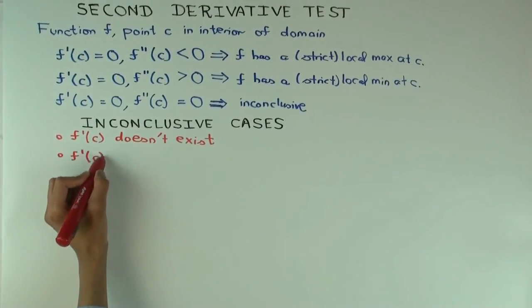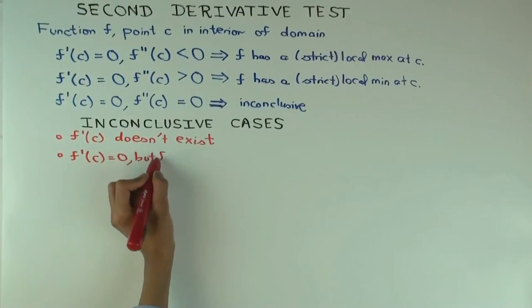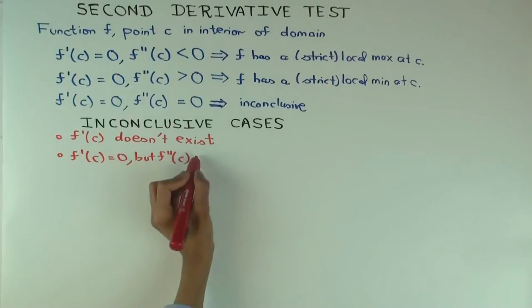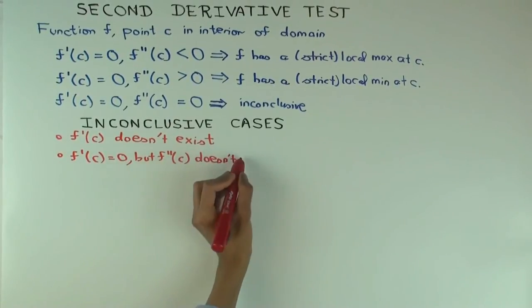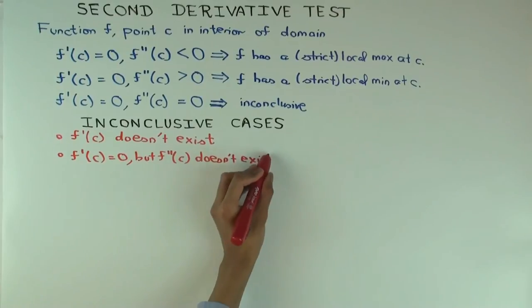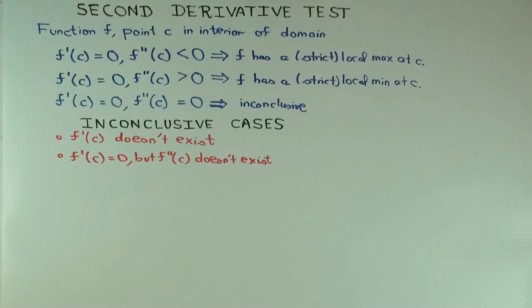Okay. The next possibility is that f'(c) is 0, but the second derivative doesn't exist. Okay. Now, in that case, can you use the first derivative test? Again, maybe.